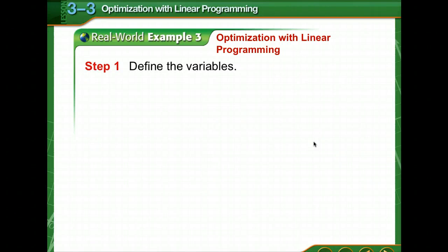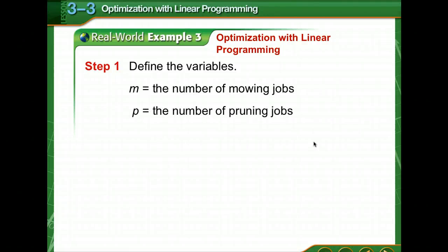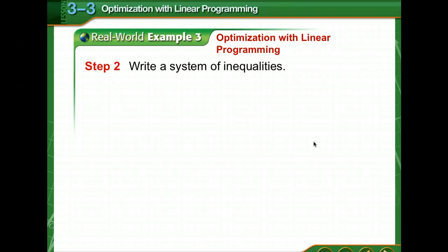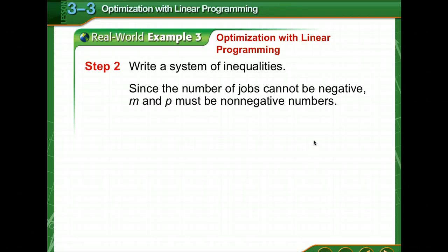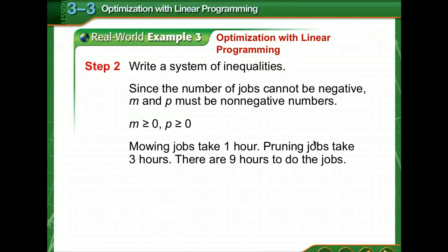So first of all, we need to figure out what variables we're going to use. We're going to let m equal the number of mowing jobs, p the number of pruning jobs. Then we need to write a system of inequalities. Since the number of jobs cannot be negative, we're going to say that they have to be non-negative numbers. Mowing jobs take one hour, pruning jobs take three hours, and there are nine hours in which to do the jobs.